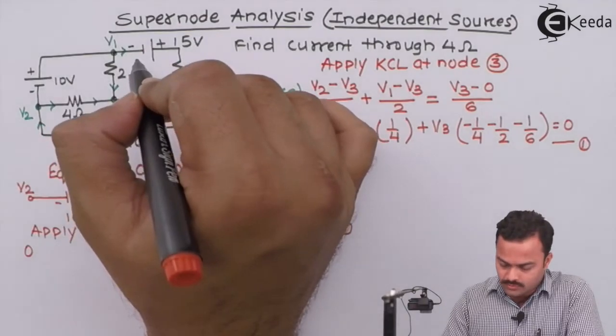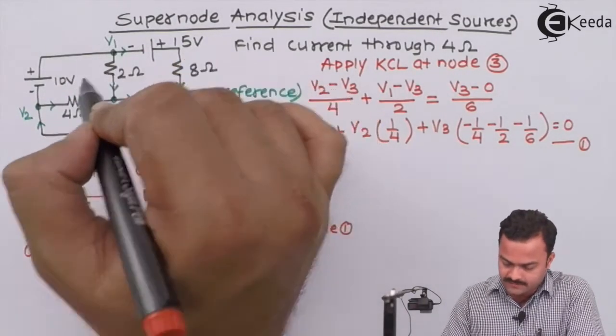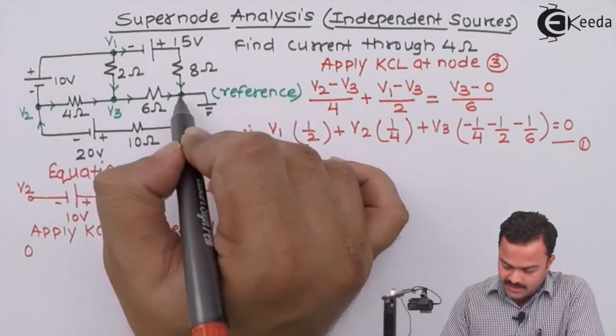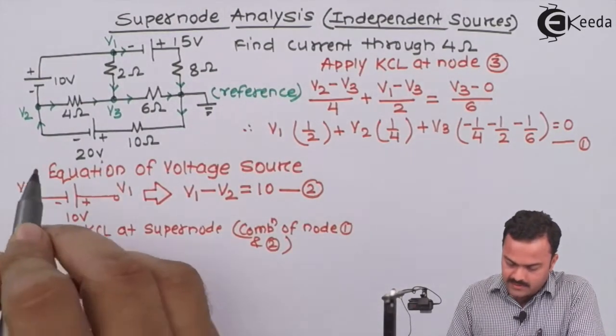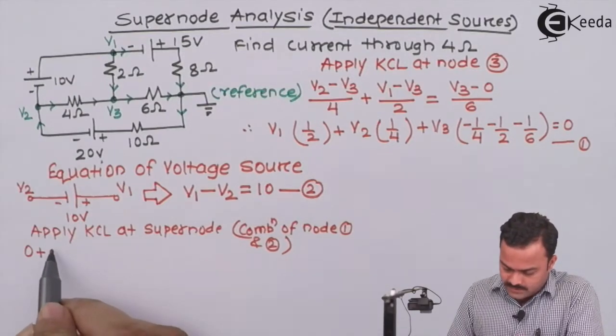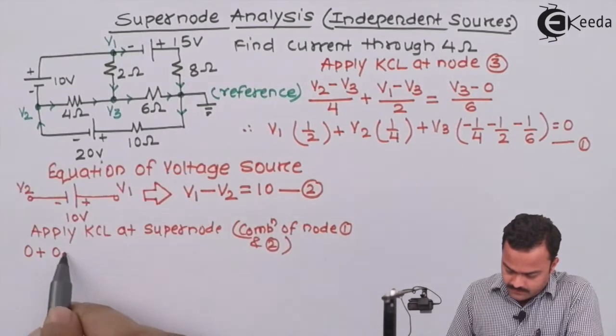Similarly, I will go to node 2 for checking any incoming current present. So this is incoming current, and this incoming current has started at the point of reference. So I will add this incoming current with the incoming current of node 1.